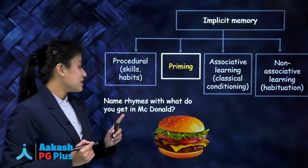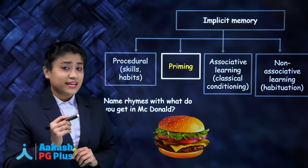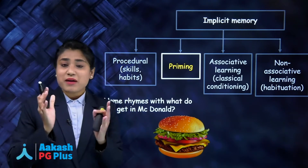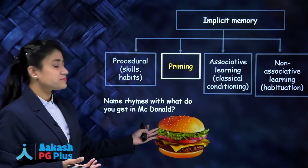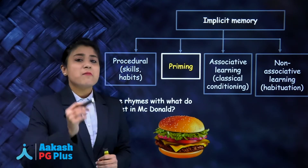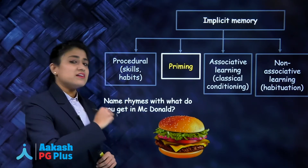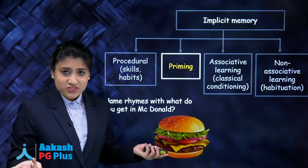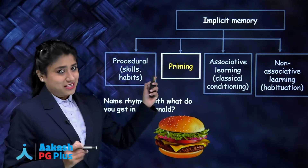Coming back to our question: the teacher said the name rhymes with what you get in McDonald's. We get a burger at McDonald's. EEG was discovered by Berger — B-E-R-G-E-R. Burger and Berger are rhyming words. So the answer to our question is priming.